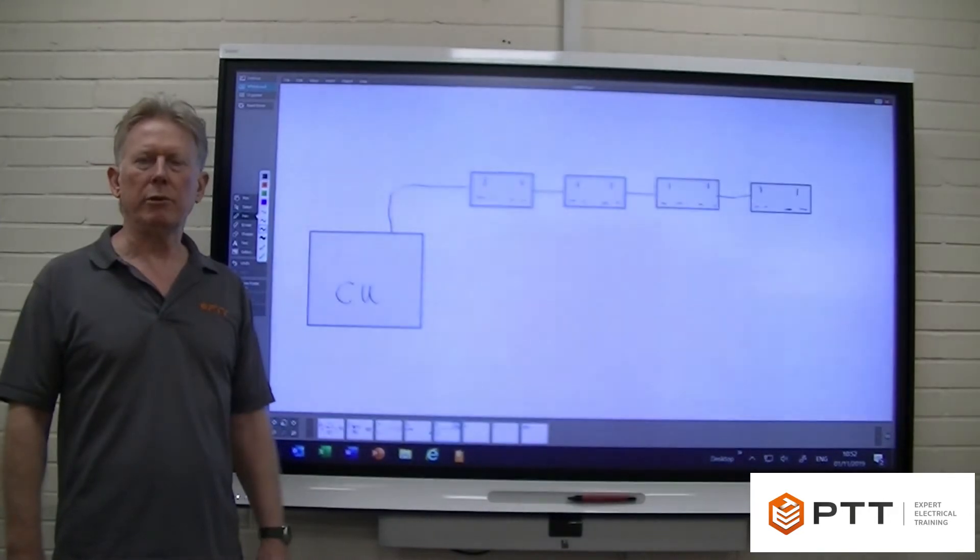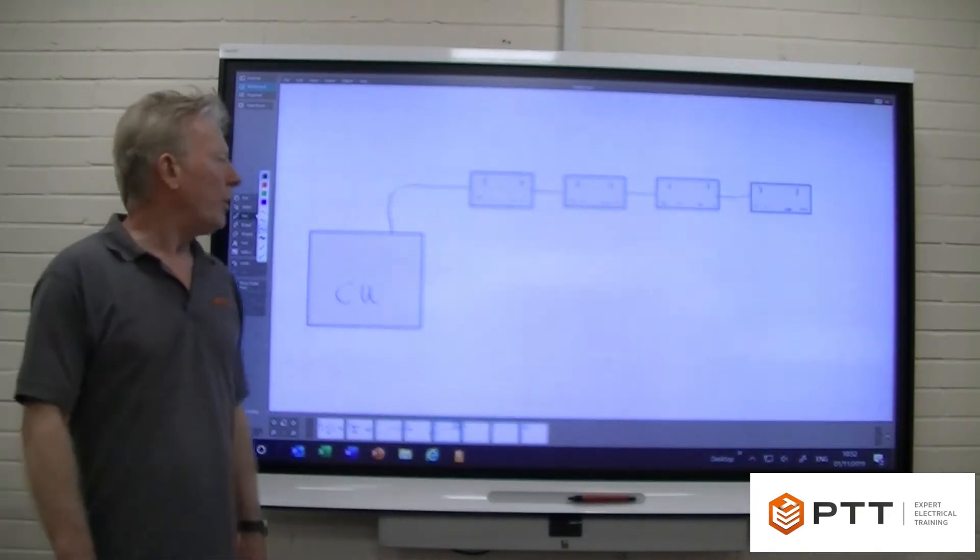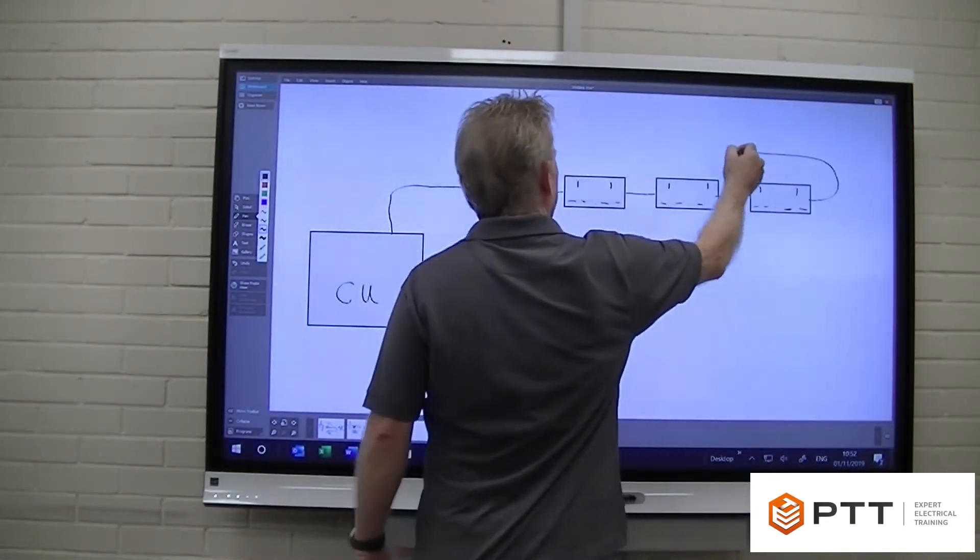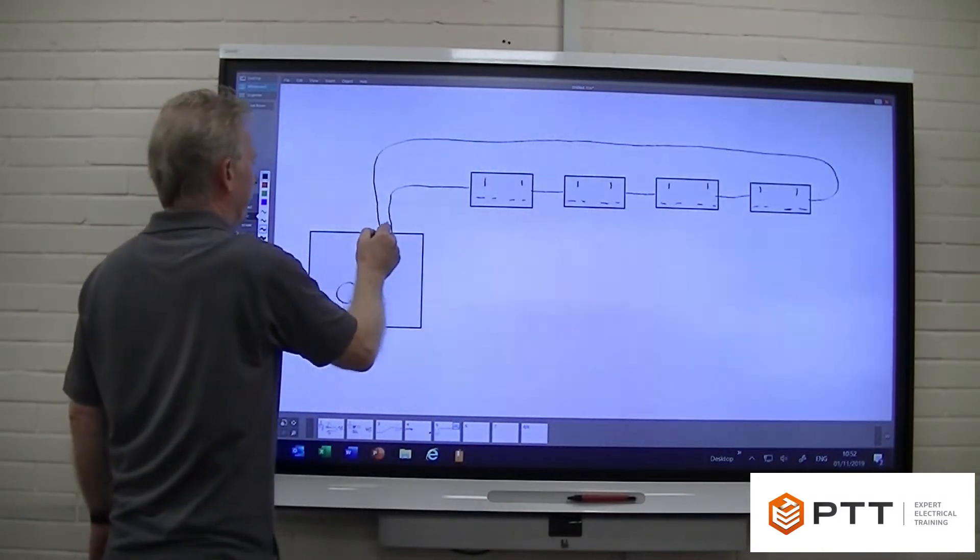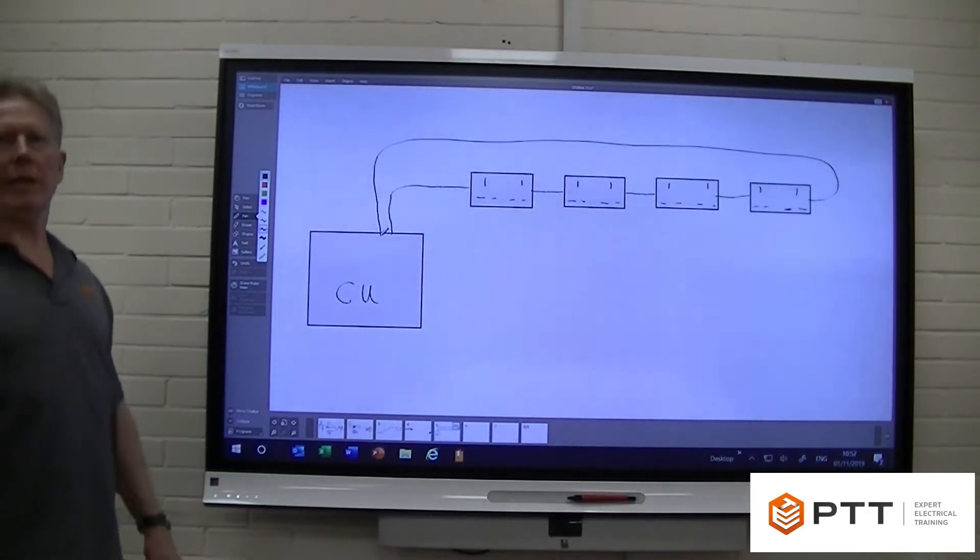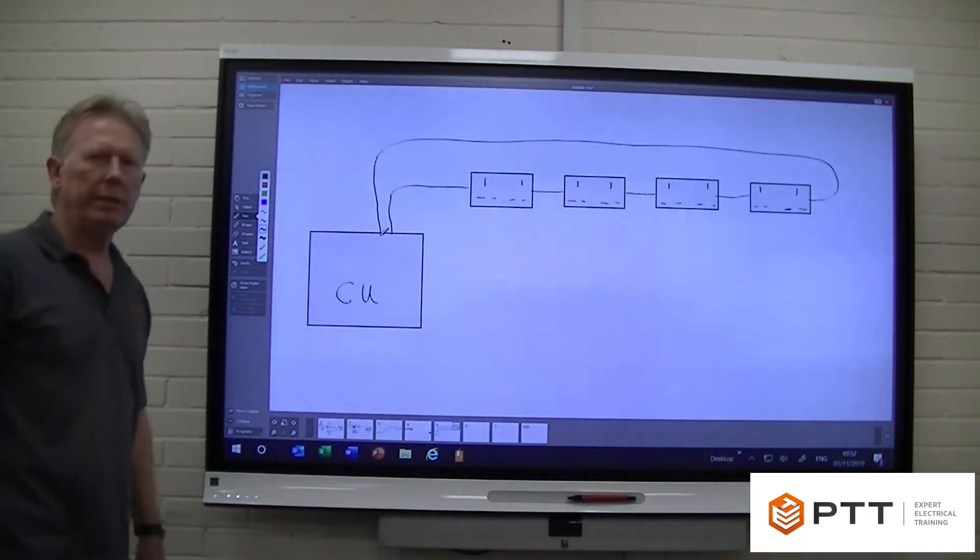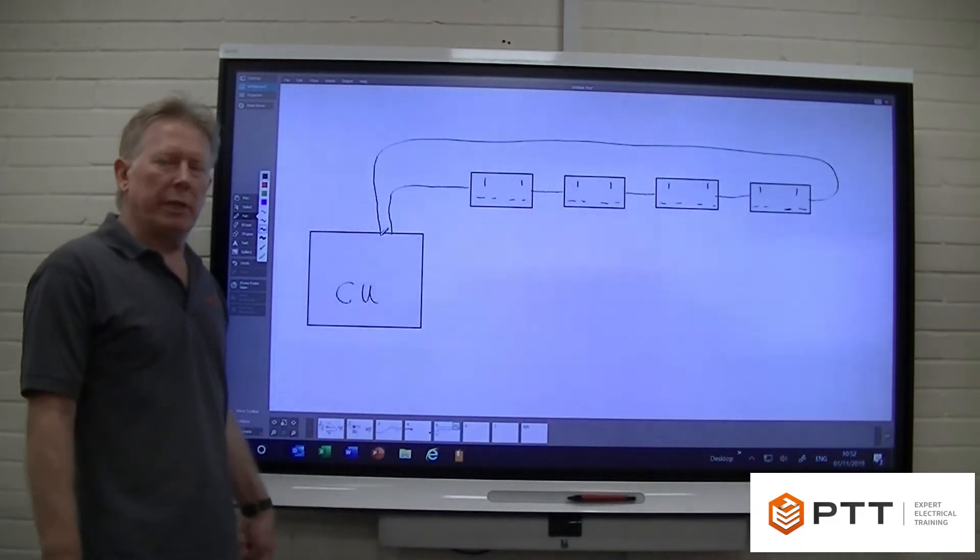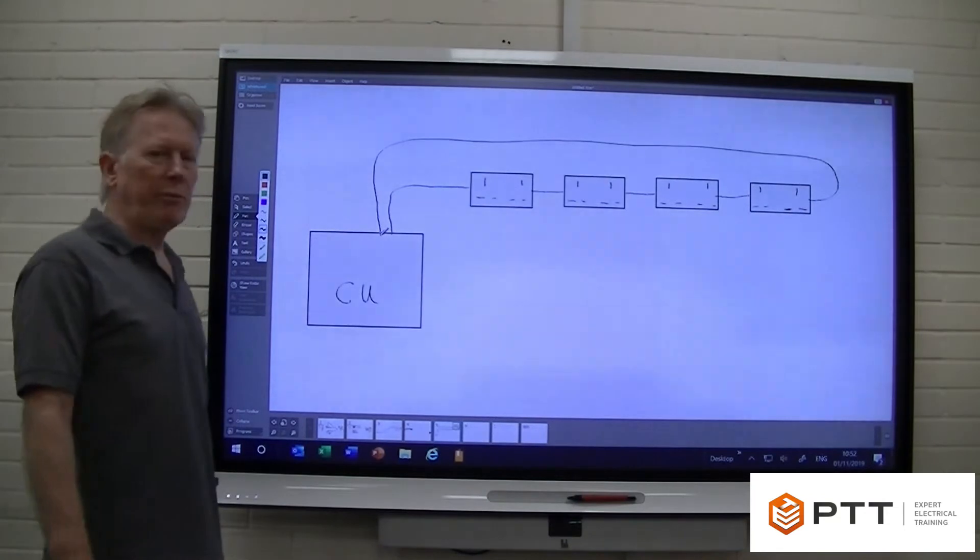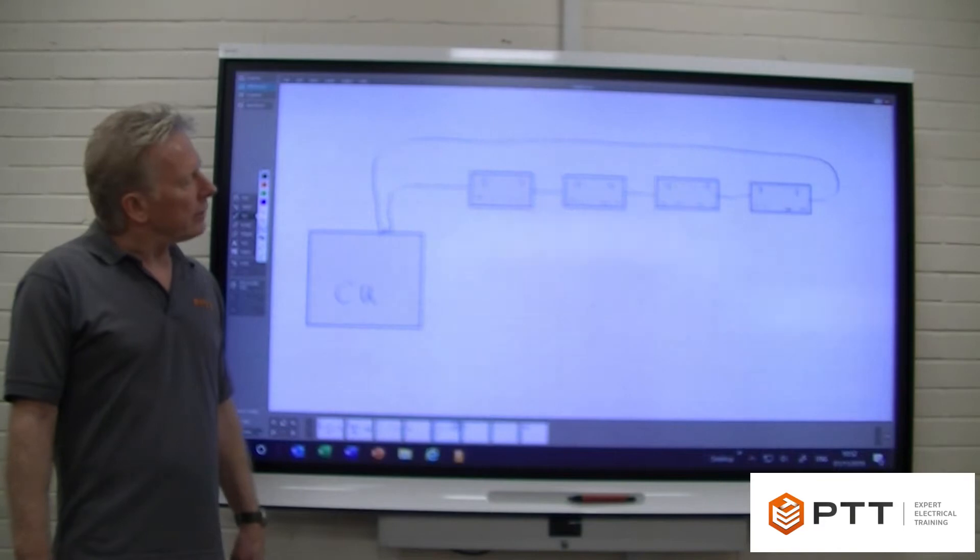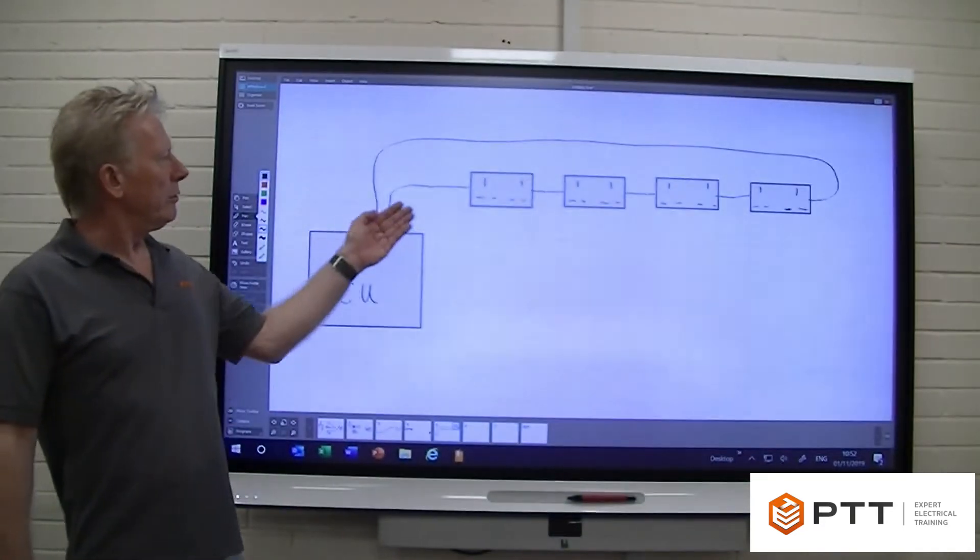But when it comes to ring circuits, the difference is the piece of cable that runs from here and goes back to the consumer unit into the top of the circuit breaker. So we've now changed that radial into a ring, and we can actually now protect that circuit with a 32 amp circuit breaker. So it'll be a B32, but as I said before, the cable could actually take 27 amps. So why is this? Well, this is because we're actually going to be sharing the current between two legs.